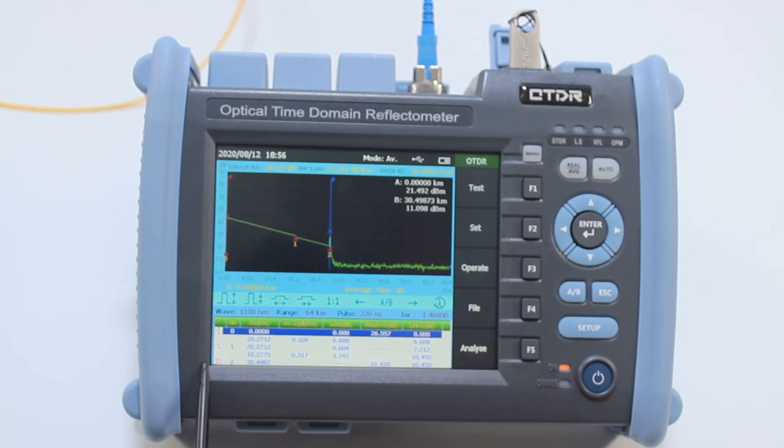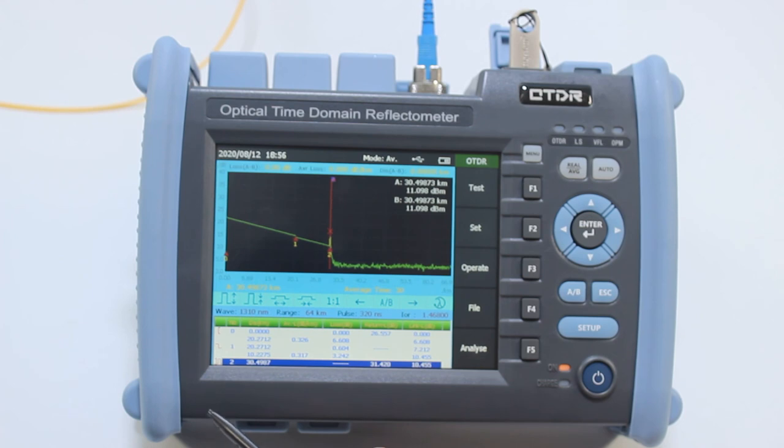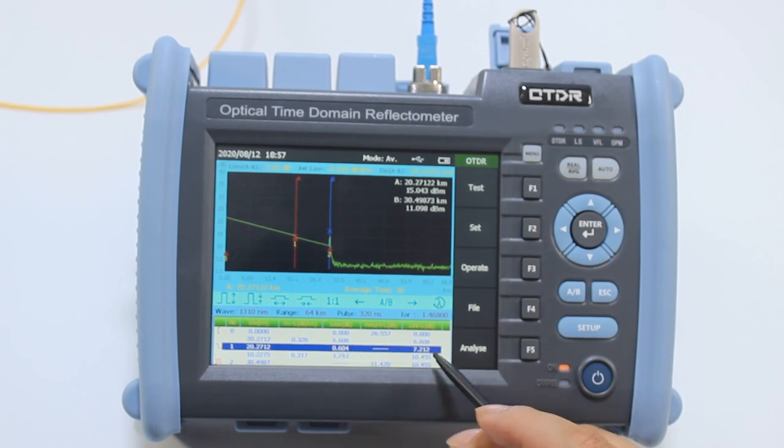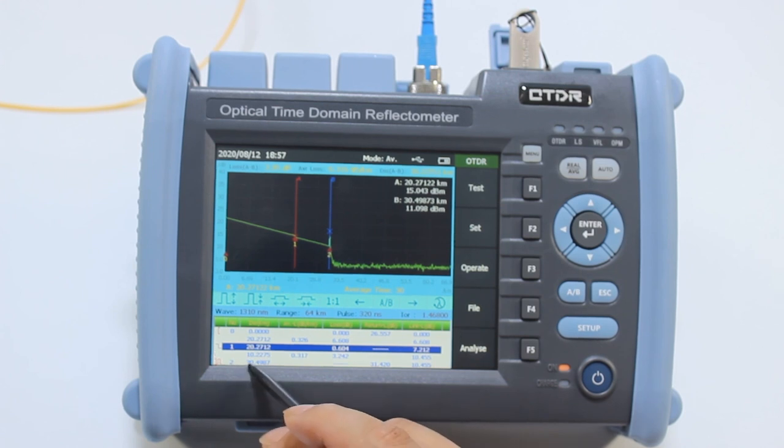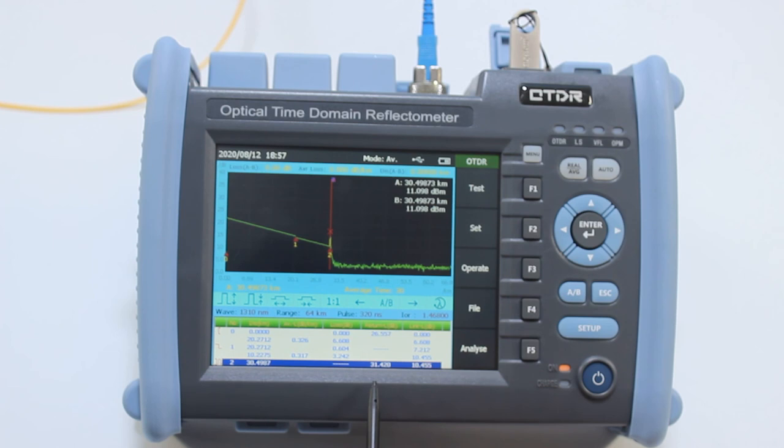Here are the detailed event information. This is the first event. This is the second event. It shows the distance, loss, and total link loss. For the second event, the distance is 30 kilometers. The return loss is about 31 dB. And the total link loss is about 10 dB.